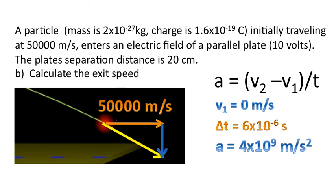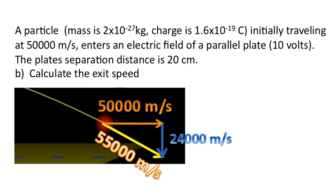Well, to do that, we're going to use a classic formula. Acceleration is the change in velocity over the change in time. We know the initial velocity is 0 in the y direction. We know the time. And we also know our acceleration. So rearranging the formula, we end up getting 24,000 meters per second. And completing the Pythagorean theorem, we end up getting an exit velocity or exit speed of 55,000 meters per second.